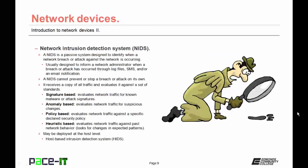Let's discuss network intrusion detection systems, or NIDS. A NIDS is a passive system designed to identify when a network breach or an attack against the network is occurring. They're usually designed to inform a network administrator when a breach or attack has occurred, and it can do this through log files, text messages, voicemails, and/or email notifications. A NIDS cannot prevent or stop a breach or an attack on its own, as it's only passive in nature.